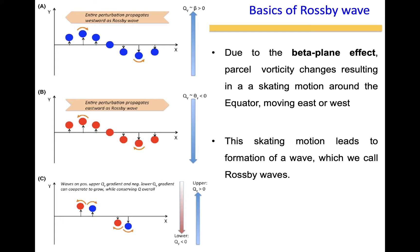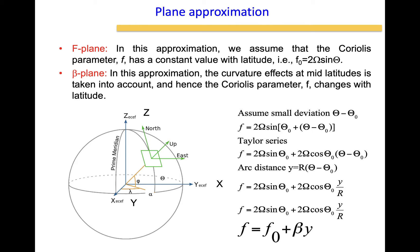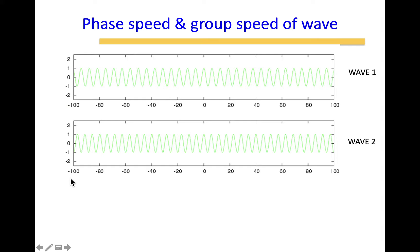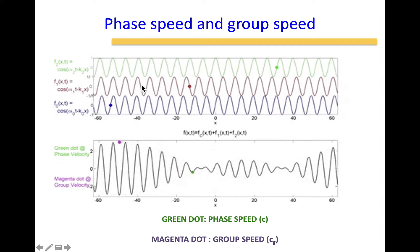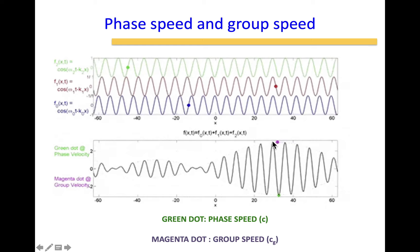Rossby waves are very prominent at mid-latitude or at the equator where the beta plane is predominant. When talking about waves, there is something known as phase speed and group speed. A wave that develops cannot be only a single wave — it will be a mixture of waves. When waves mix together they do so in either a constructive or destructive fashion, resulting in something known as a group wave, which has very different characteristics than an individual wave. That is what we call the dispersion relation.